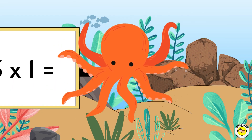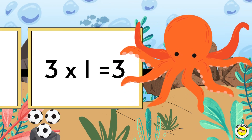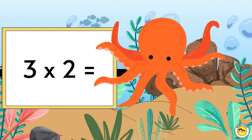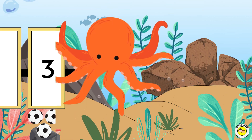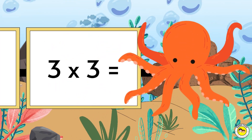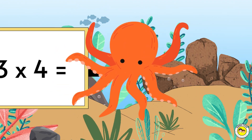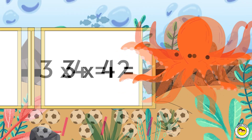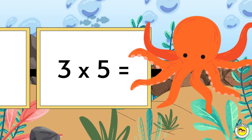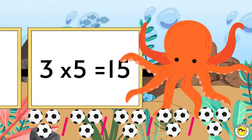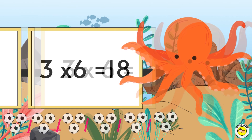Three times one equals three. Three times two equals six. Three times three equals nine. Three times four equals twelve.